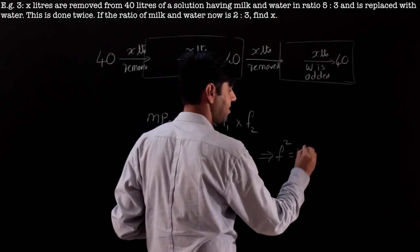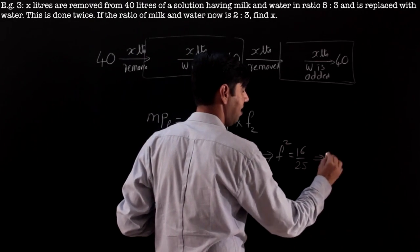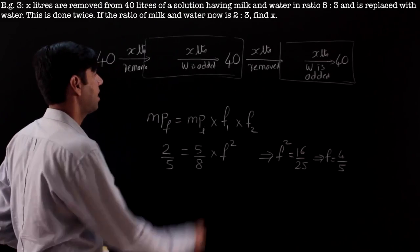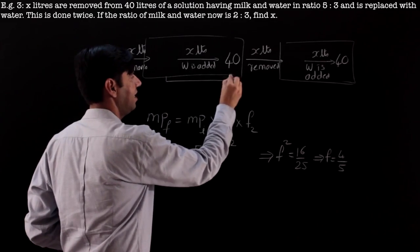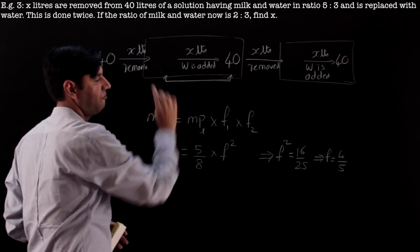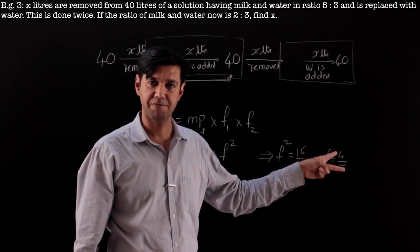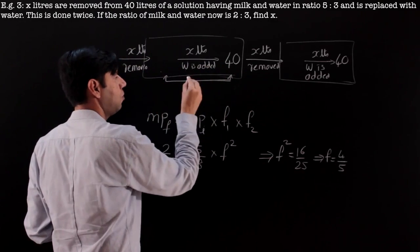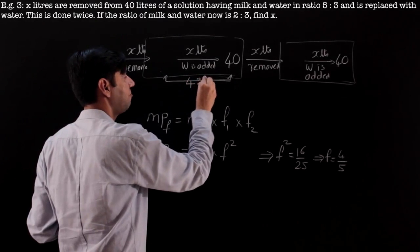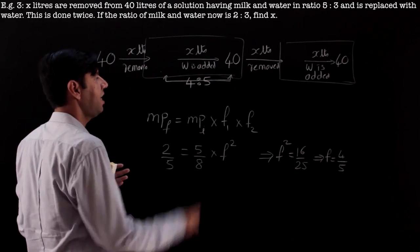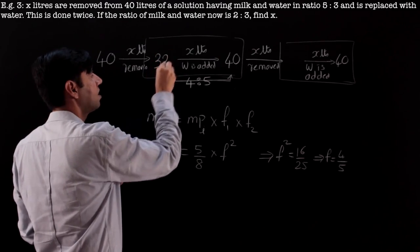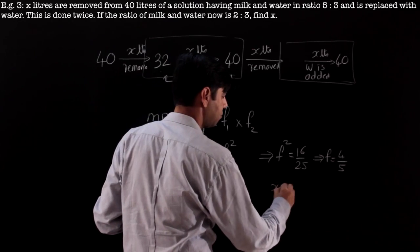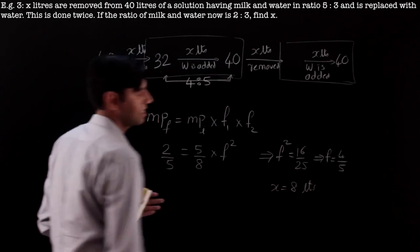So what does f squared turn out to be? f² = (5/8) ÷ (2/5)... working it out: 16/25, so f = 4/5. What this means is when water is added, the ratio of volumes has to be 4:5. Remember it's an addition, so the inverse applies — 5 parts corresponds to 40 liters, so 4 parts corresponds to 32 liters, and x removed will be 8 liters.